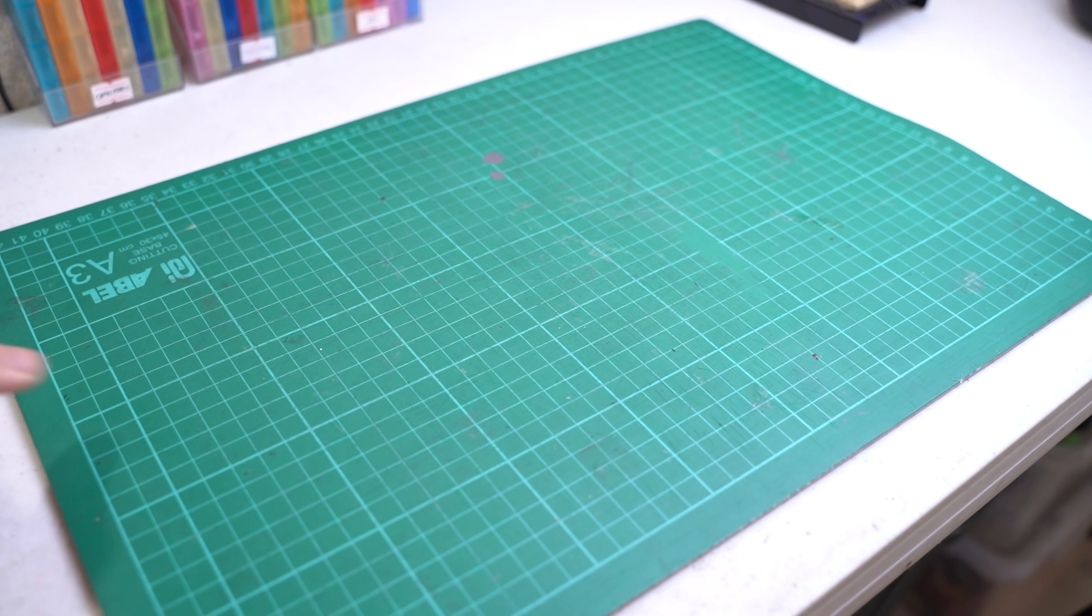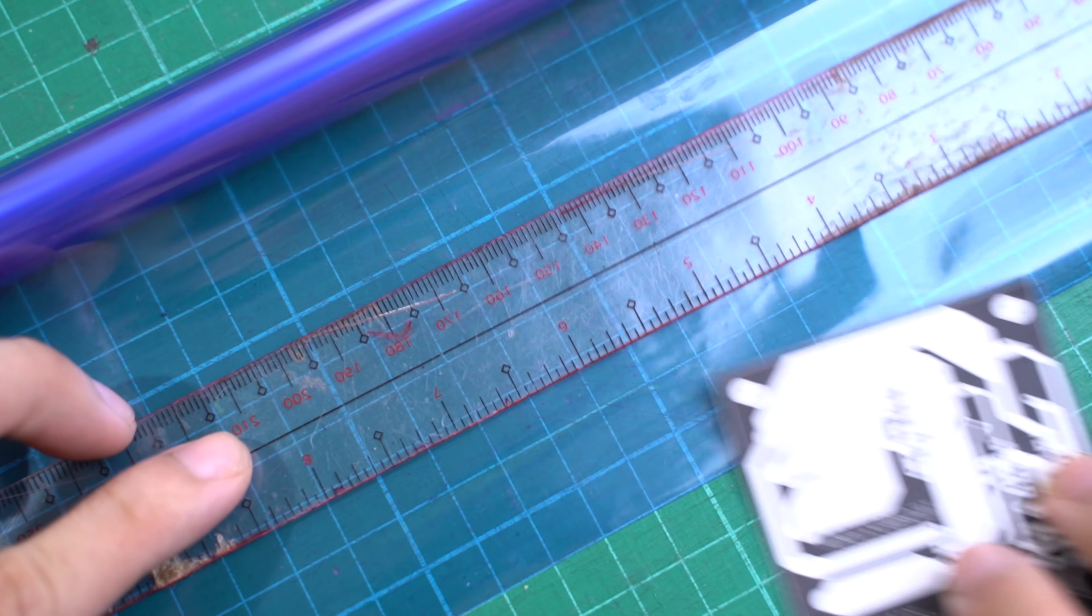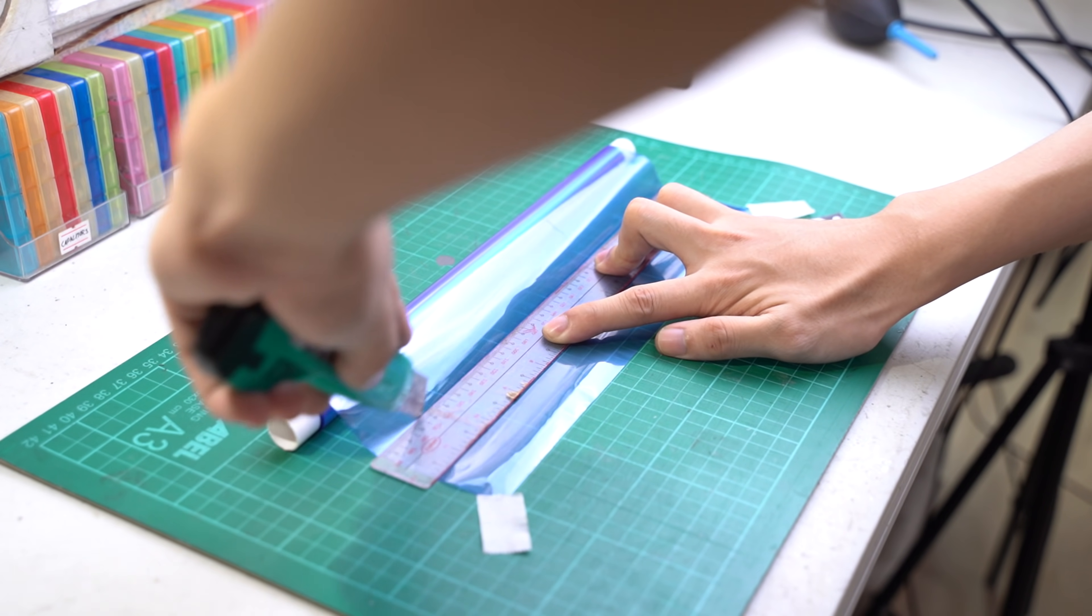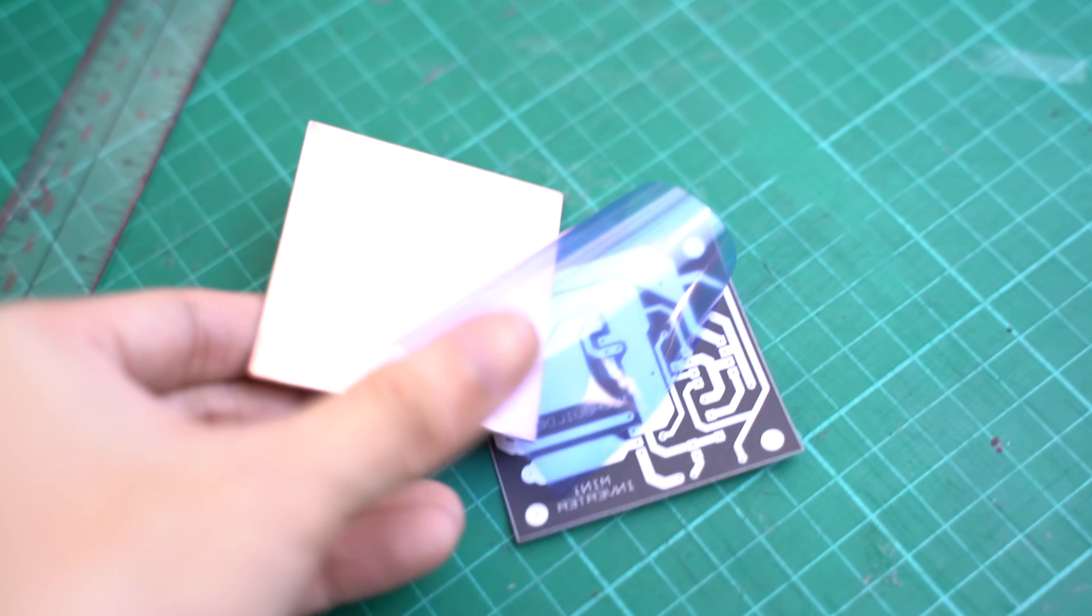Grab a cutting board and your dry film roll and cut a piece enough to cover your PCB footprint. Just like a camera film, do this in a dim environment as the dry film is sensitive to light. And now you have a raw PCB, the dry film, and your layout.